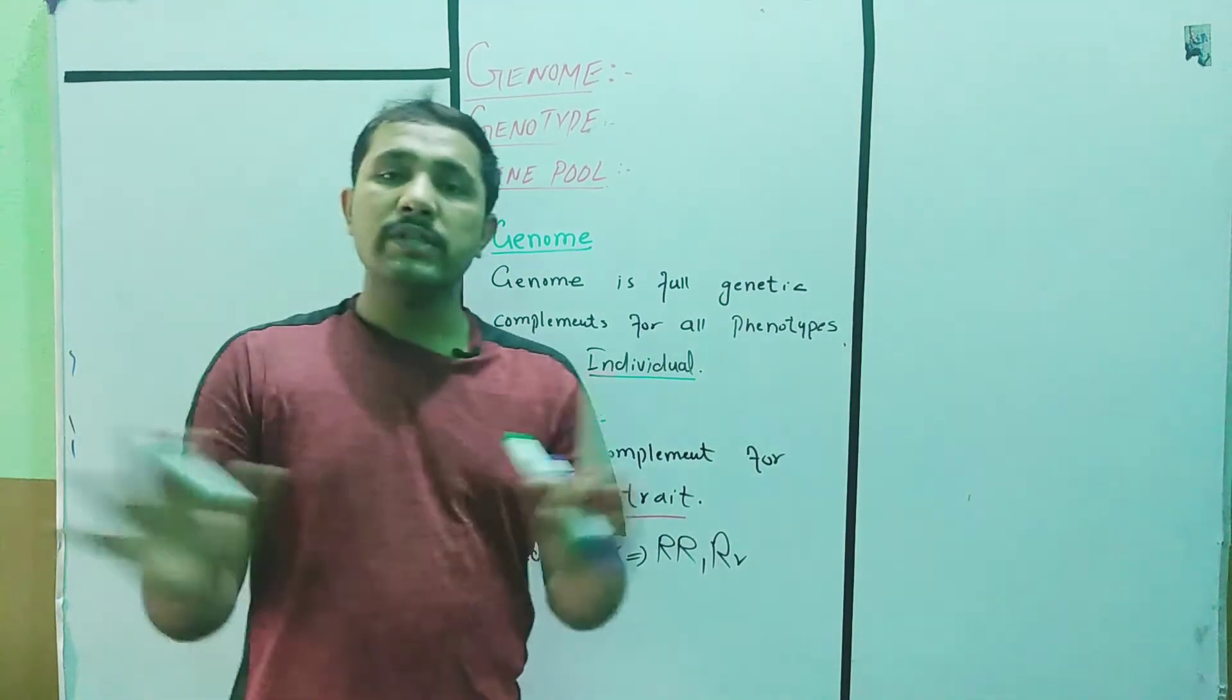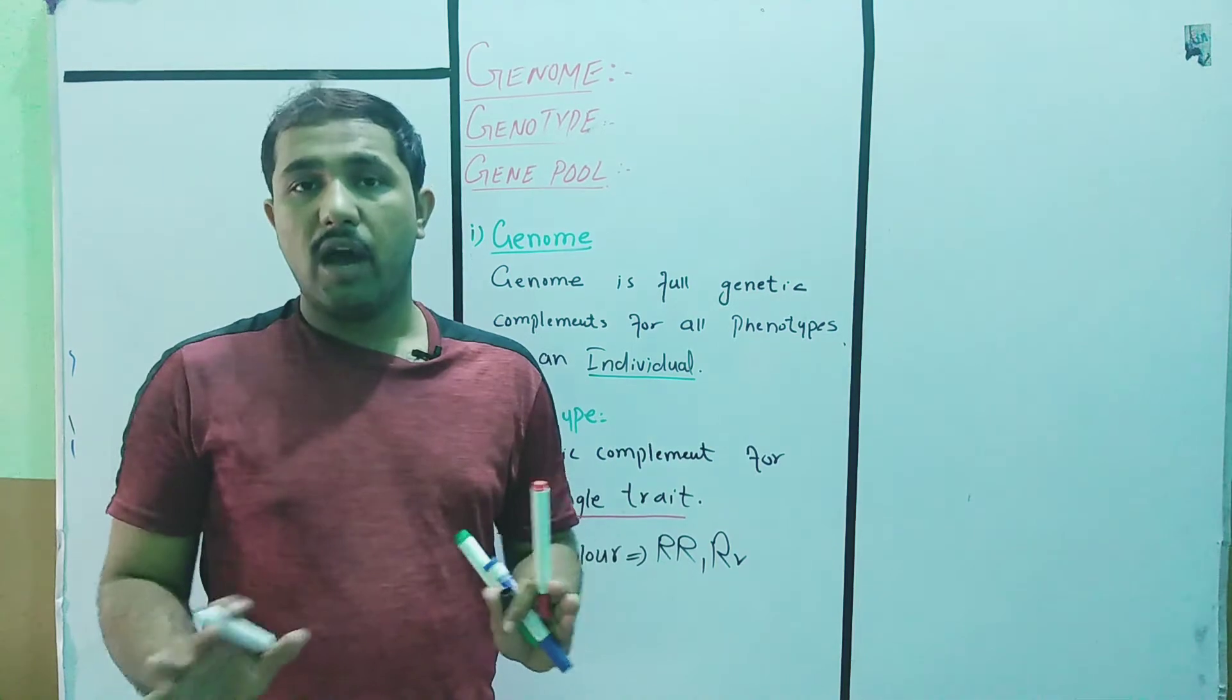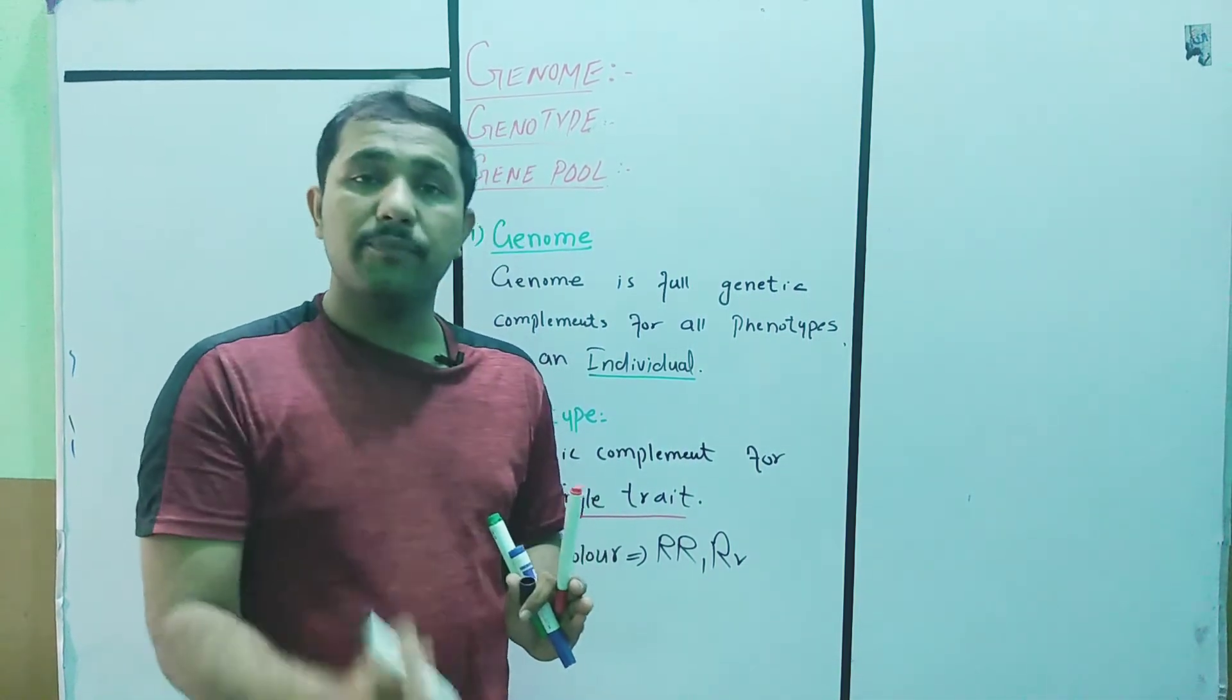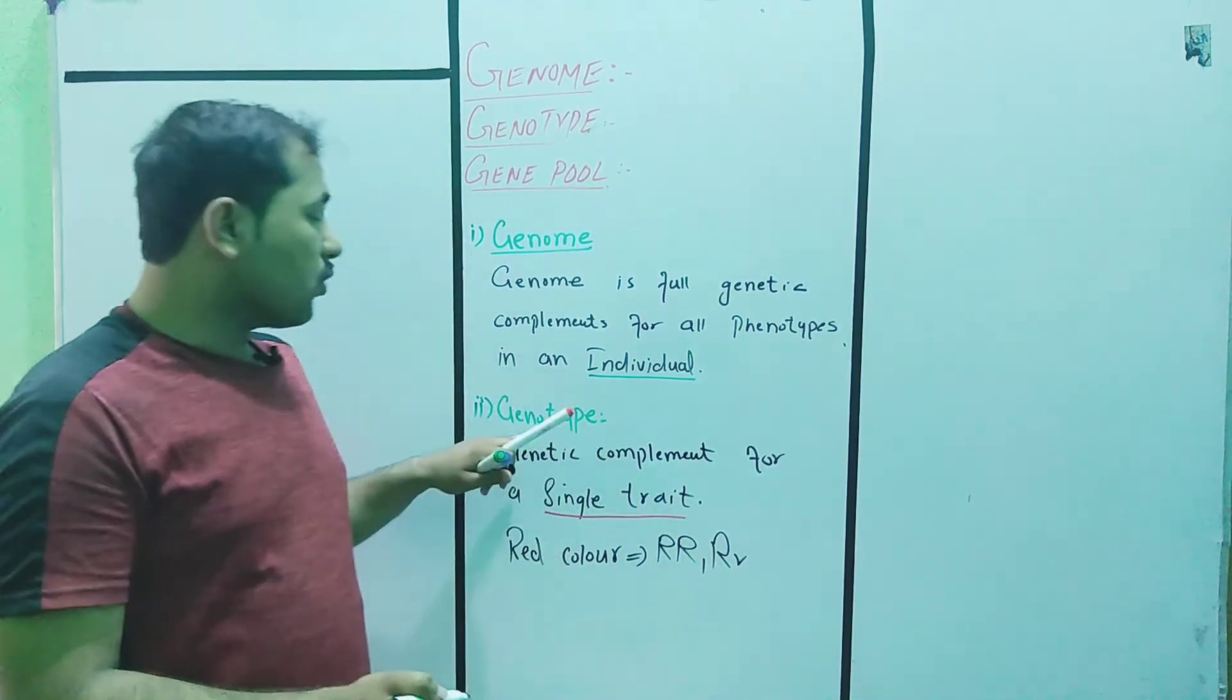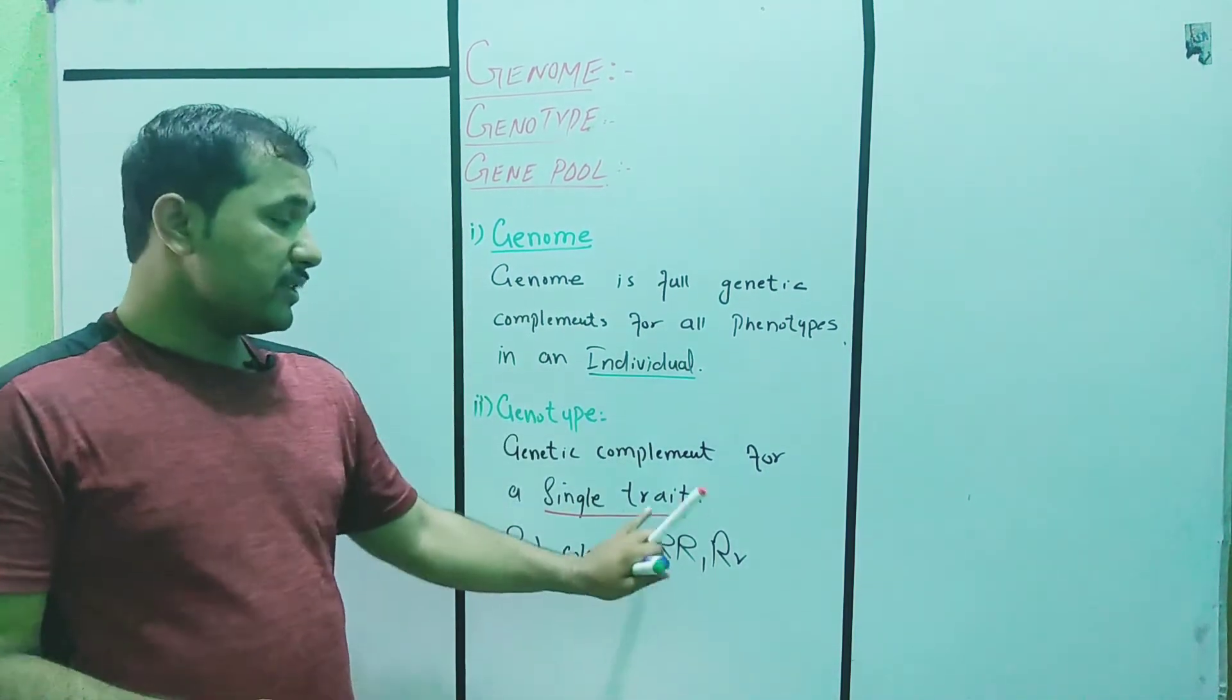So genome, the whole set of traits controlled by DNA, is for a single individual. But if we take only one trait and study its genetic complement, that is called genotype. Genome for an individual, genotype for a single trait.